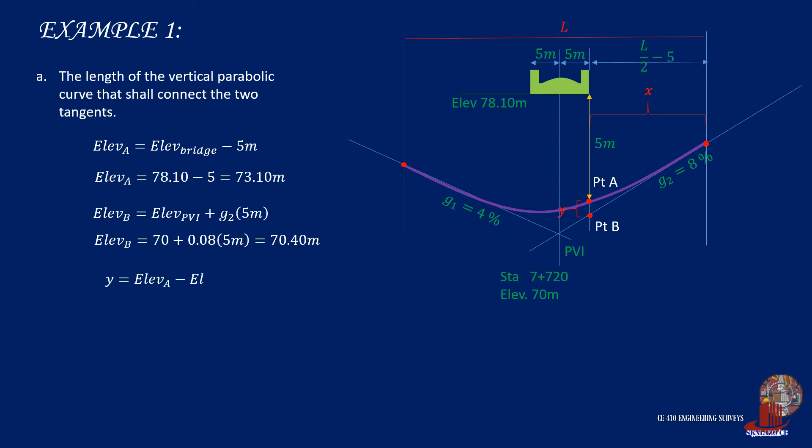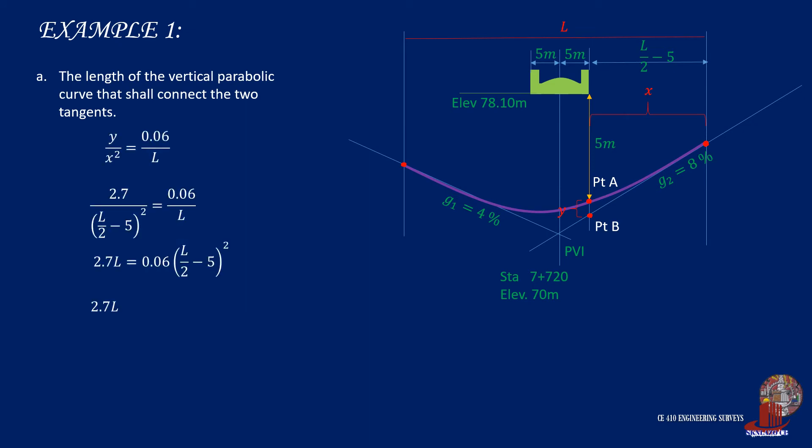Knowing the two elevations, take the difference as that is y, so 73.1 less 70.40 is equal to y of 2.7 meters. From the modified working equation, we can now plug the values of x and y.